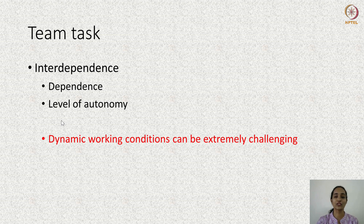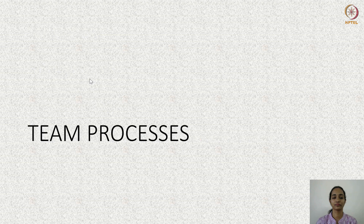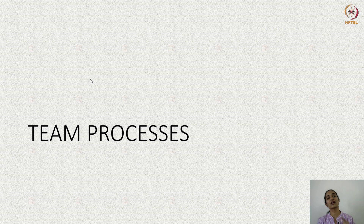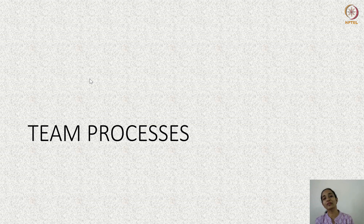Now let us look at team processes. We are going to look at three: coordination, communication, and collaboration. They are highlighted because they are very different from the way they happen in human-human teams.